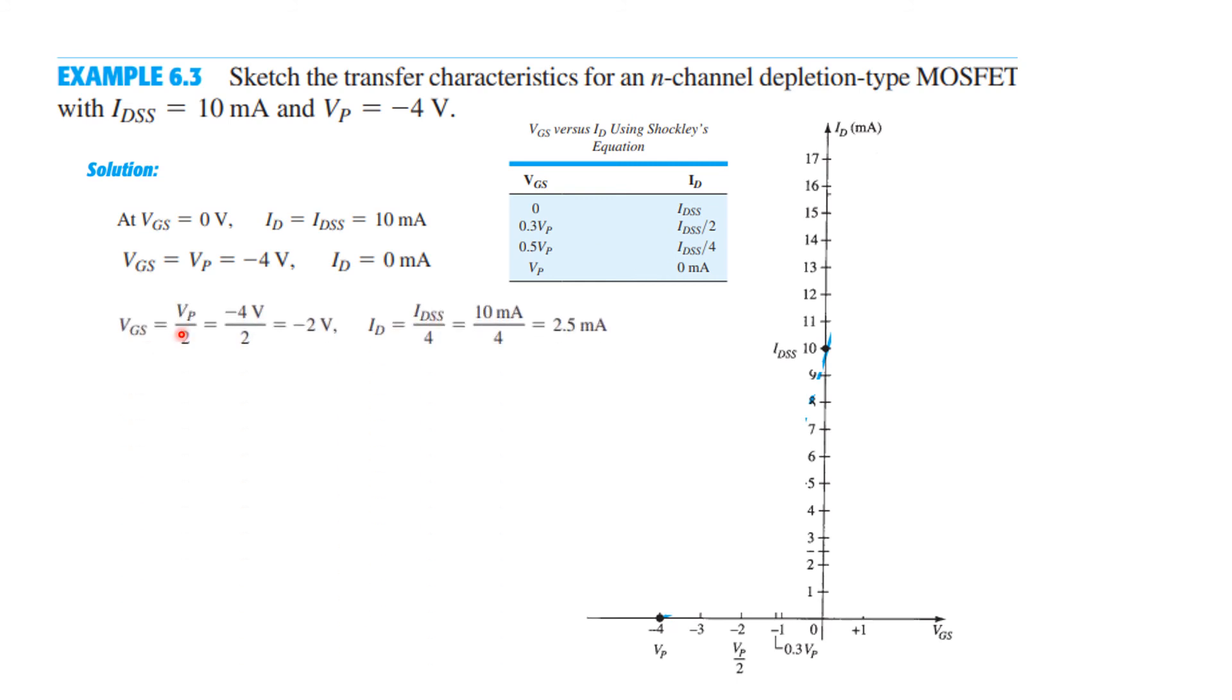And VG is VP by 2, that is minus 4 by 2, that is minus 2, so we are at this point. And ID will be IDSS by 4, which is 10 divided by 4, that is 2.5 milliamps. So this is one point and the second point is here so we will just plot a dot here, so we have plotted the dot.